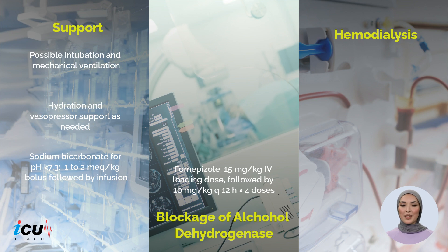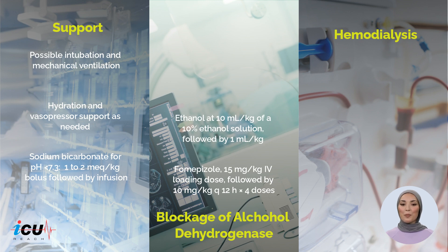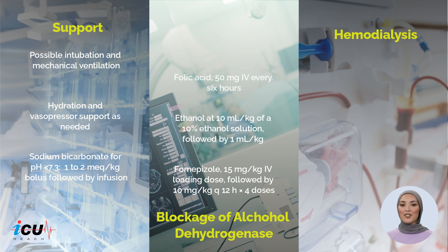If fomepizole is unavailable or the patient has a known allergy, ethanol at 10 mL/kg of a 10% ethanol solution, followed by 1 mL/kg per hour, can be infused and should be titrated to a serum ethanol concentration of 100 mg/dL. In addition, folic acid should be used at a dose of 50 mg every 6 hours.